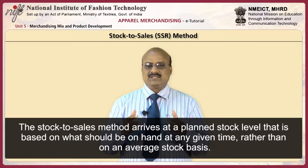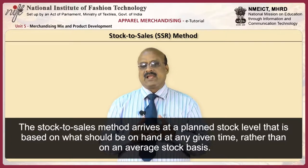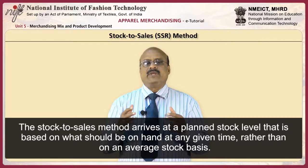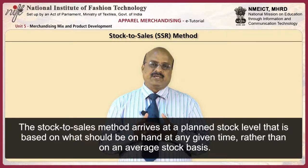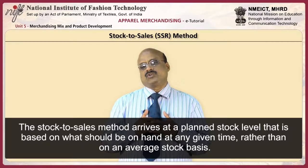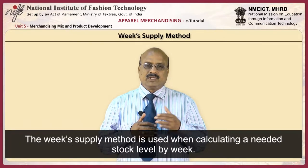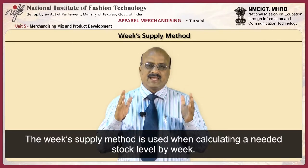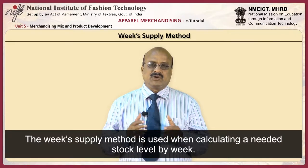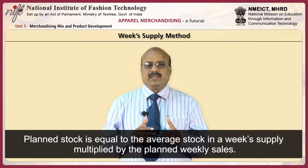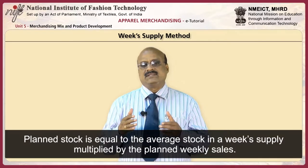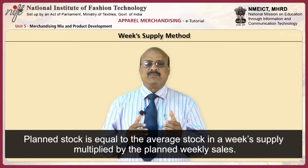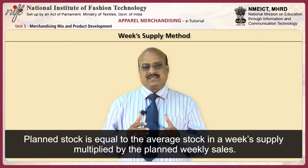The stock to sales method arrives at a planned stock level that is based on what should be on hand at any given time rather than on an average stock basis. The weekly supply method is used when calculating a needed stock level by week. Here, planned stock is equal to the average stock in a week's supply multiplied by the planned weekly sales.